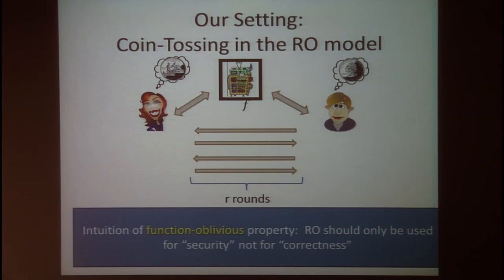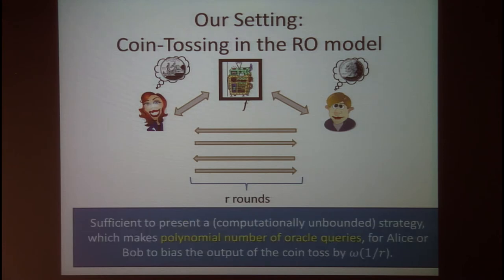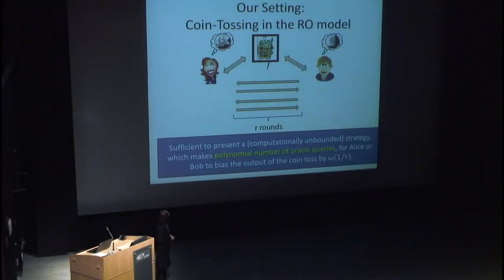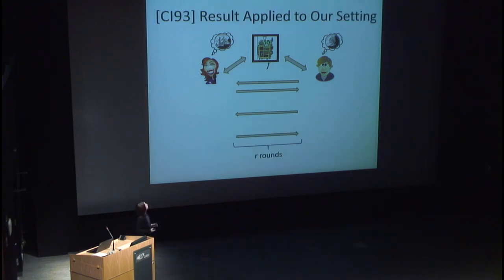This example gives intuition for what function obliviousness does: it imposes that the random oracle should only be used for the security of the coin toss, not for the correctness property. In the random oracle model, to prove our lower bound it suffices to present a computationally unbounded strategy for Alice or Bob that makes polynomially many oracle queries and imposes bias greater than one over r on the outcome.